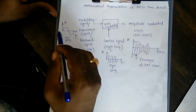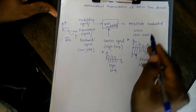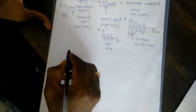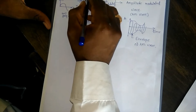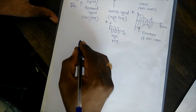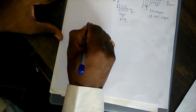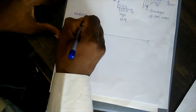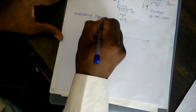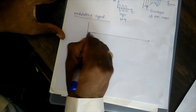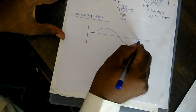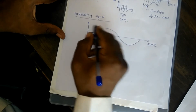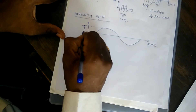Whatever the envelope or the output waveform generated of the amplitude modulated wave looks like this. Our basic motive is to make a mathematical representation of this particular AM time domain wave. Let us have a look at the nature of the modulating signal. The modulating signal is a low frequency signal. On the X axis it is time, on the Y axis it is amplitude. I will denote the peak amplitude of the modulating signal by EM.